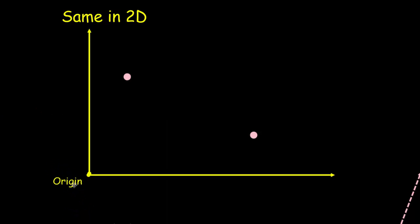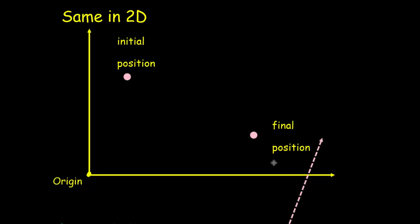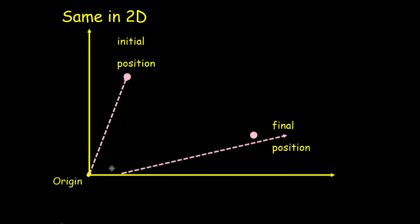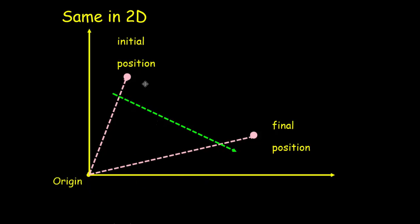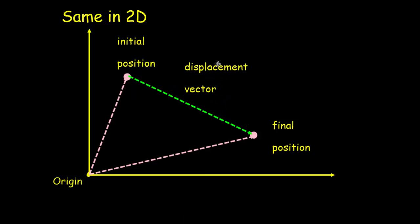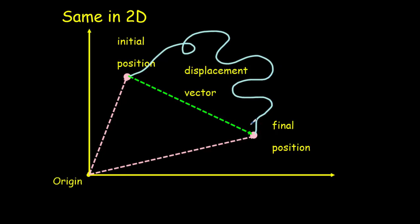This all works the same in two or three dimensions. We start with a fixed origin and place our coordinate axes there. For a motion from some initial position to some final position, we can describe those positions as points or as vectors — an initial position vector and a final position vector. The vector from the initial to the final position is called the displacement vector, and it tells us nothing about the path taken.